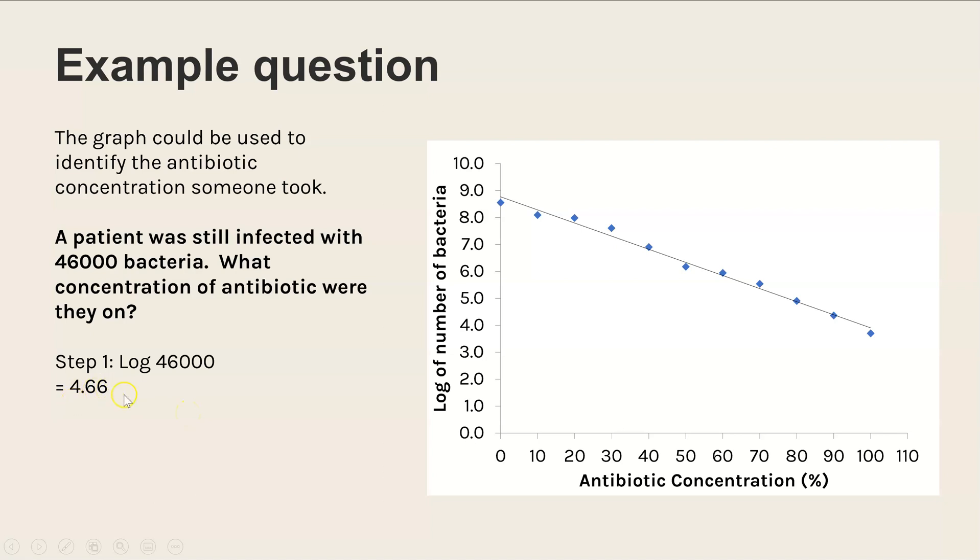Now we have the log number, we can go to the axes and draw a line at 4.66, go into the trend line, and then down to see which antibiotic concentration they must have been on, and that would be 88 percent.